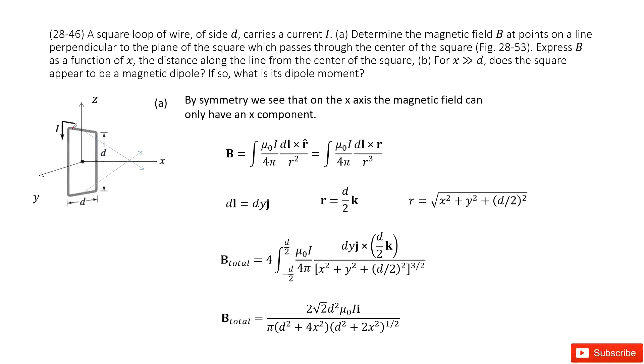We have a square loop of wire. The side is d and the current is I. First, we need to determine the magnetic field at a location. We consider this location as a function of x. So this length is x, this is position P.